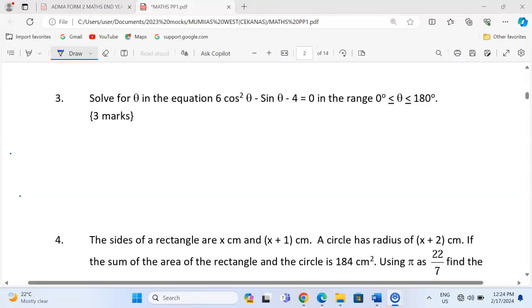Thank you for joining this lesson. We're going to discuss trigonometric equations. In number 3, we've been told to solve for θ in the equation 6cos²θ - sinθ - 4 = 0 in the range 0° ≤ θ ≤ 180°.